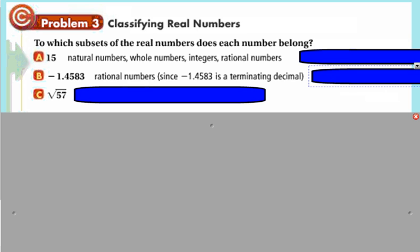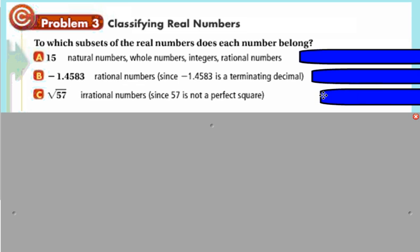Square root of 57. Take your calculator and find the square root of 57. It's going to be a never-ending decimal, so that's irrational.